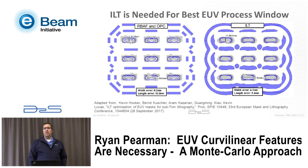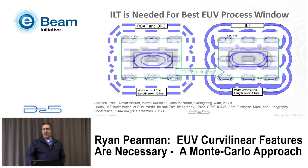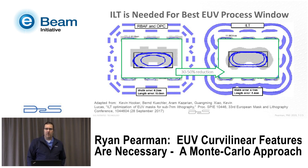There is a very good paper given at EMLC two years ago by Kevin Lucas who showed many different test cases — this is just one of them — that EUV actually required curvilinear shapes. Summarizing with essentially one result, you get about a 30 to 50% wafer plane process window enhancement by going to curvilinear features.